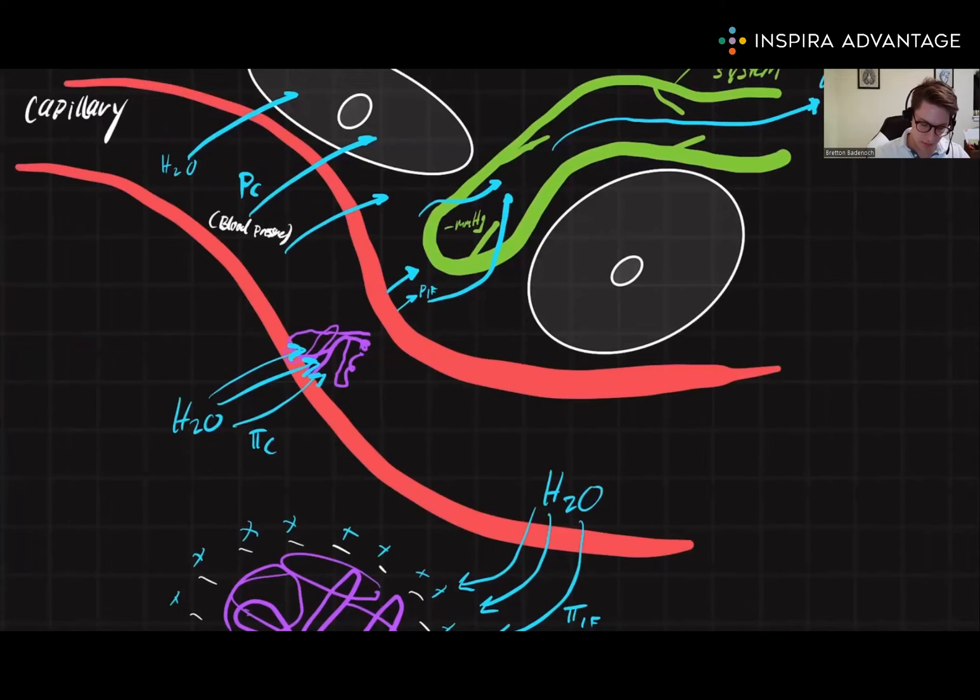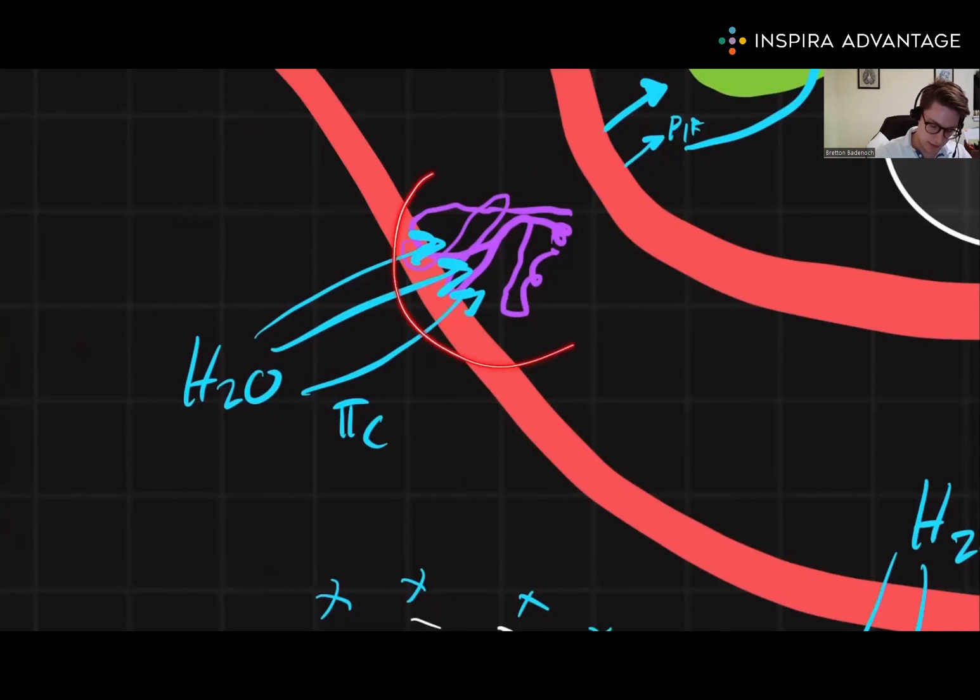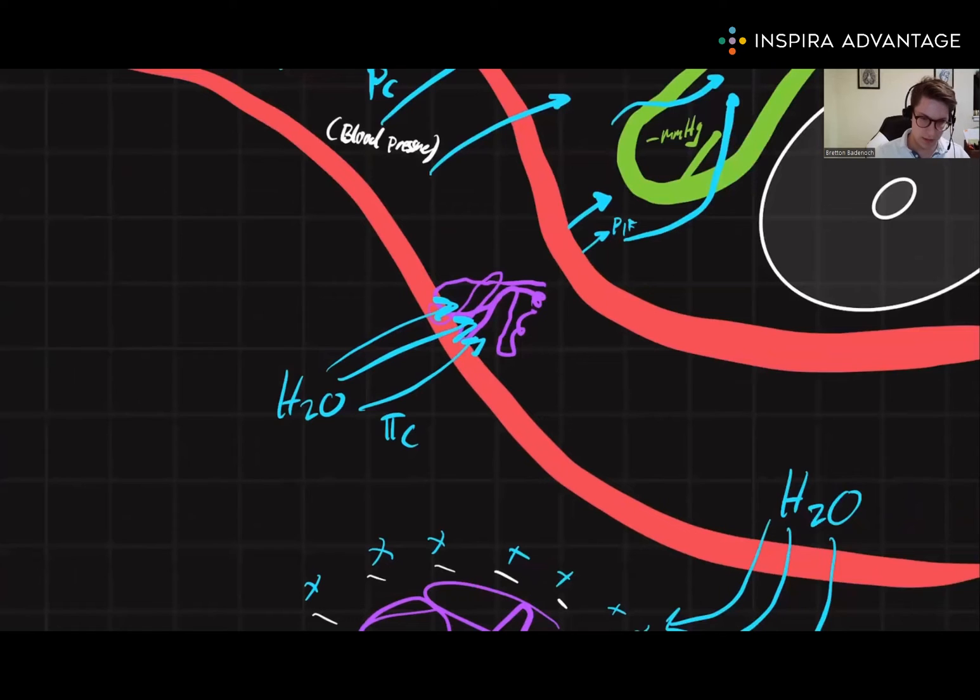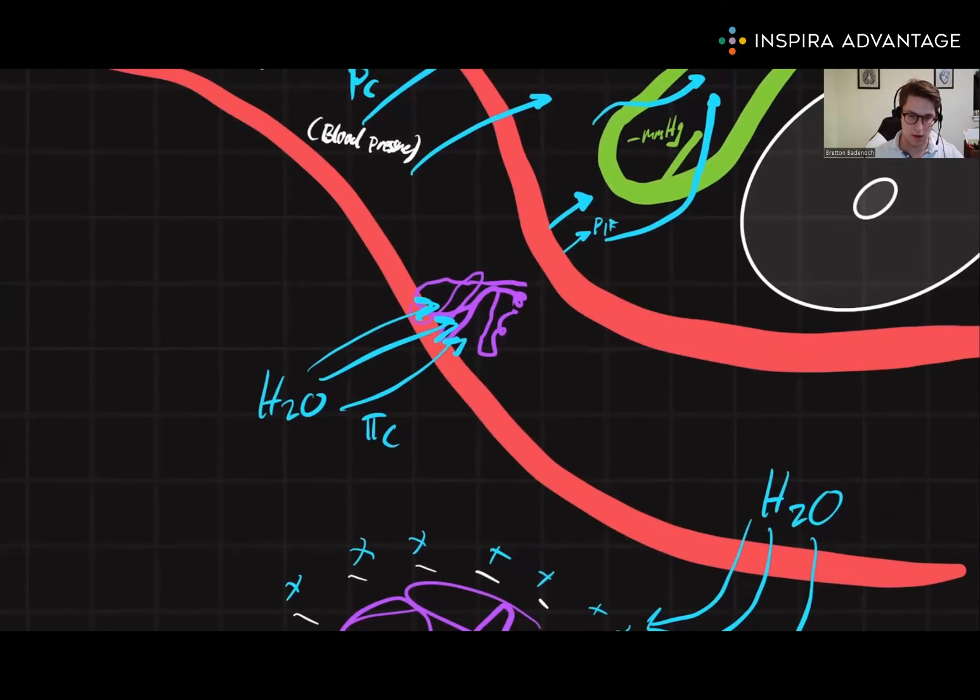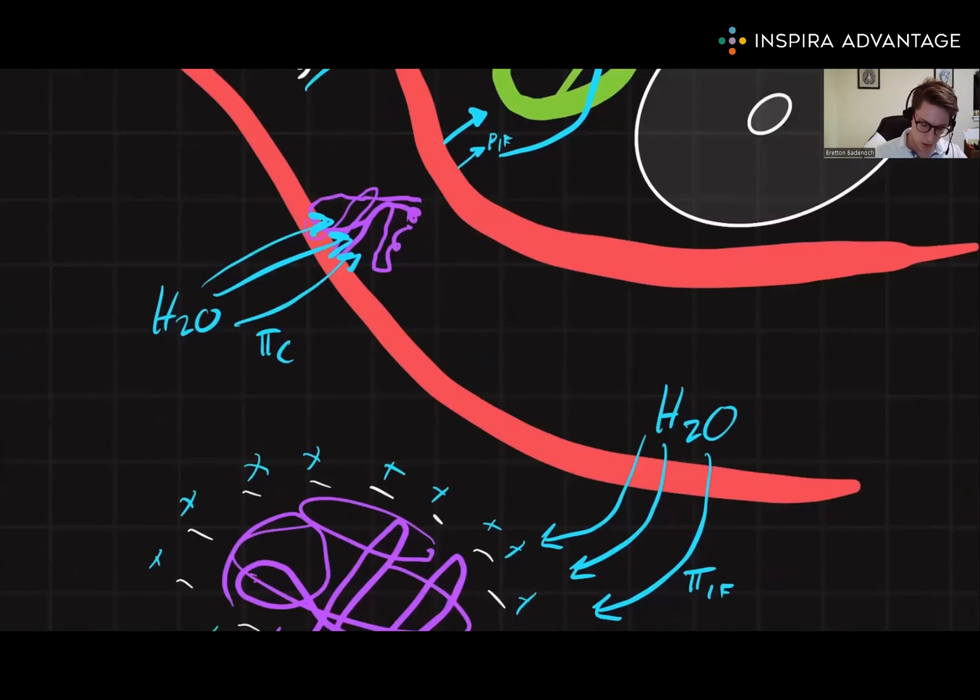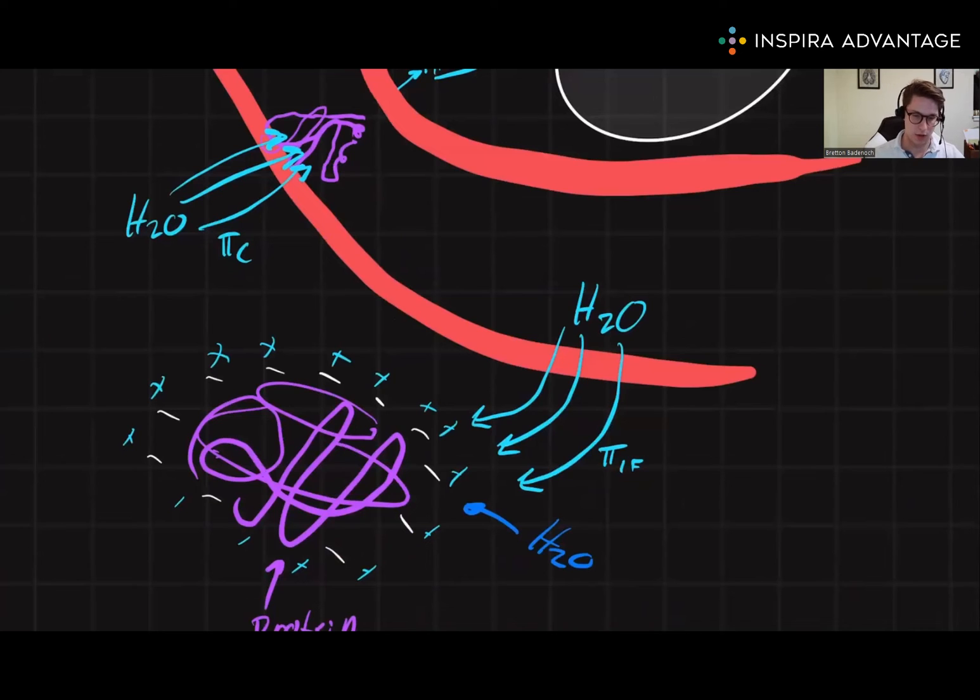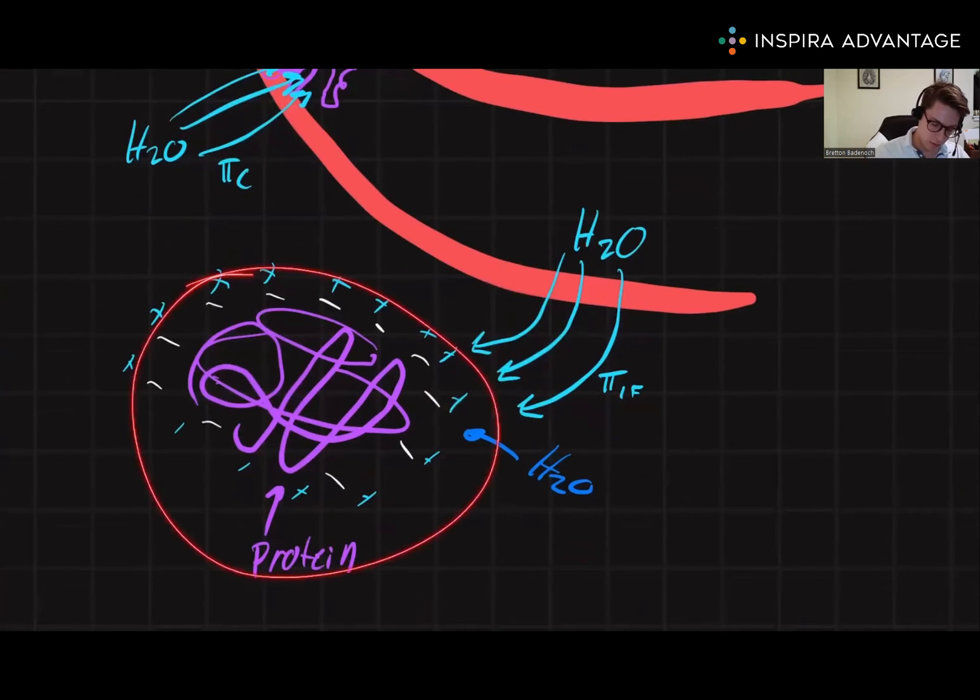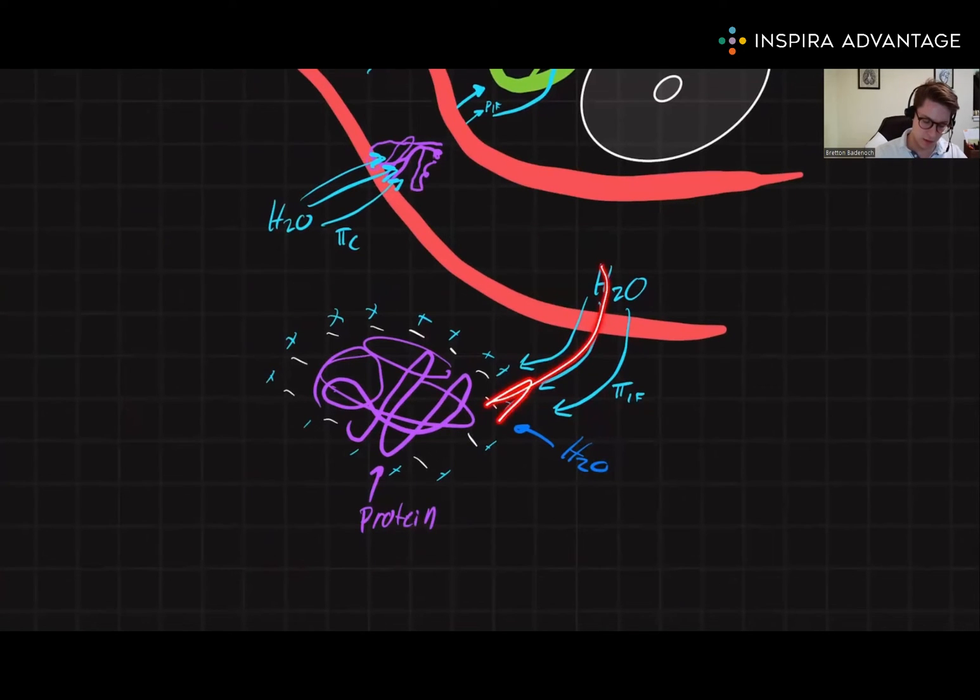Again, on the diagram, the proteins are symbolized here in purple. And we see that pi C, or the plasma colloid oncotic pressure, causes water to move back into the blood vessels. Whereas the interstitial colloid osmotic pressure, or PIF, results from proteins outside of the vessels, causing water to move out of the vessels to go be with the protein, to surround the protein.